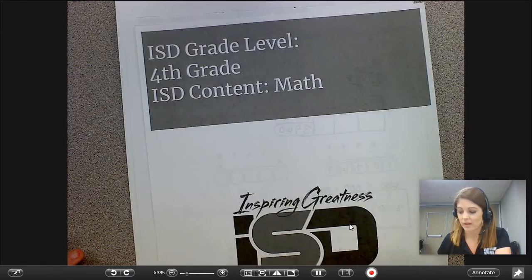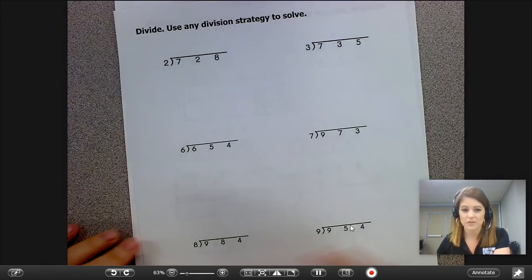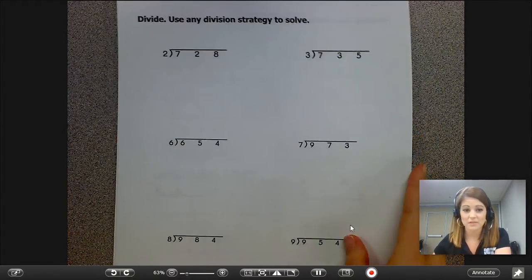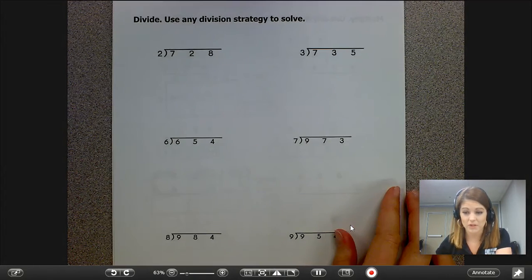In your packet, go ahead and turn to your very first division page. You will see that you have six division equations, all three digit by one digit.